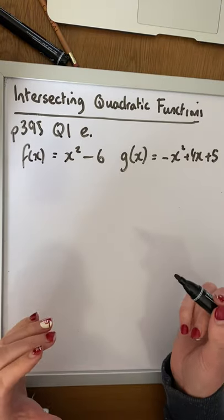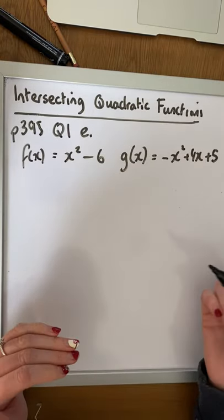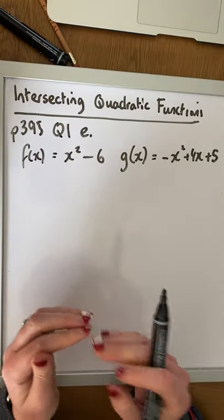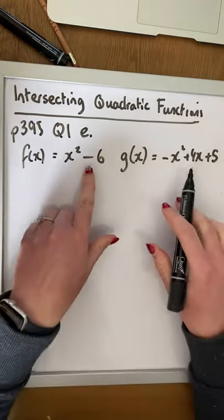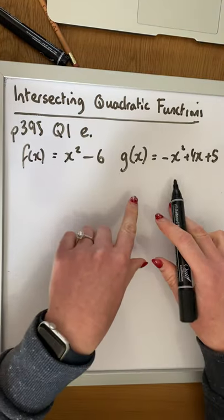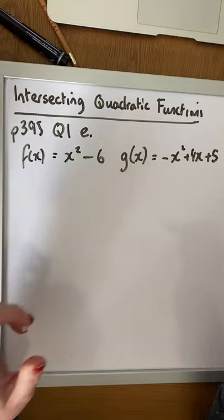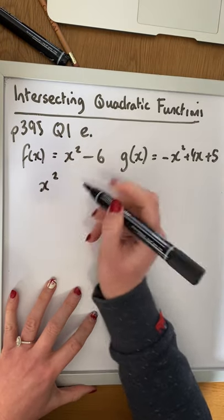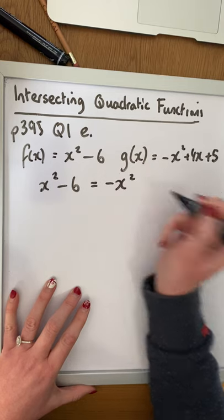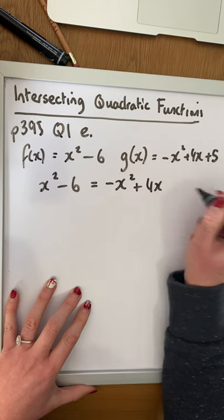So looking at solving algebraically, first of all, all we do is we let the two equations equal each other, because remember, we're dealing with one variable on the right-hand side. This one is y equals x squared minus 6, y equals minus x squared plus 4x plus 5. So we can simply let them equal each other and solve. x squared minus 6 is equal to minus x squared plus 4x plus 5.